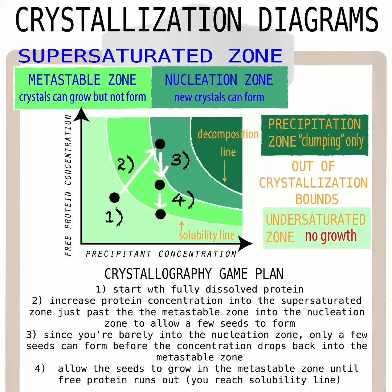As the crystal starts growing, it takes more protein out of solution, so you're going down on the y-axis — lowering the free protein concentration — and going back into the metastable zone. In the metastable zone, you don't get more nucleation, which is good, because now you're not getting a bunch of tiny crystals. Eventually the crystals grow and you take out so much protein that you go back into the undersaturated zone, where there's plenty of solvent for all the free protein and no more crystals grow.